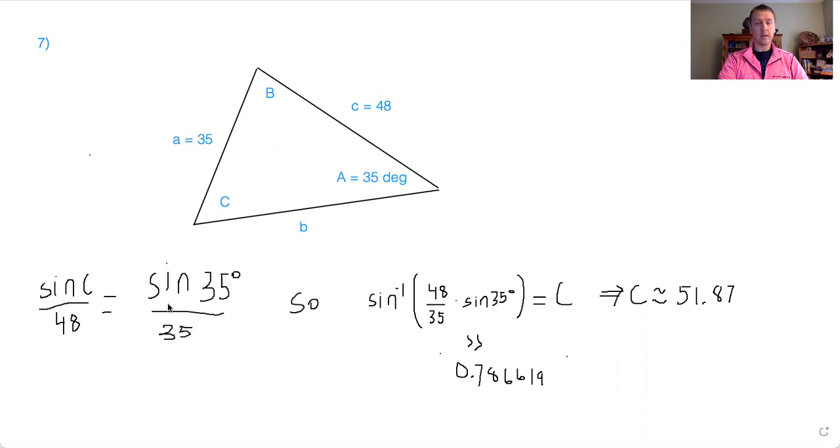When you go ahead and rearrange this, you find that sine of C is 48 times sine of 35 over 35. Taking the inverse of that, using a calculator, this inside argument is approximately 0.786619. So taking the sine inverse, you get 51.87.